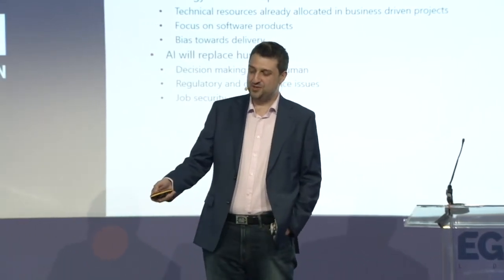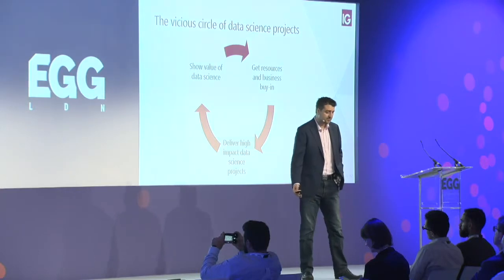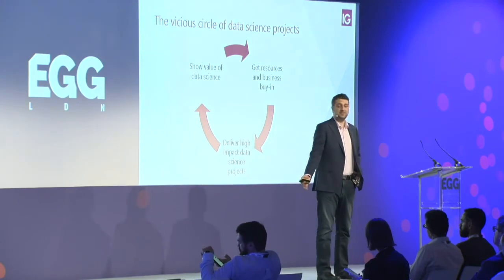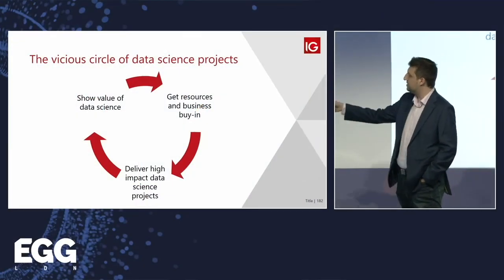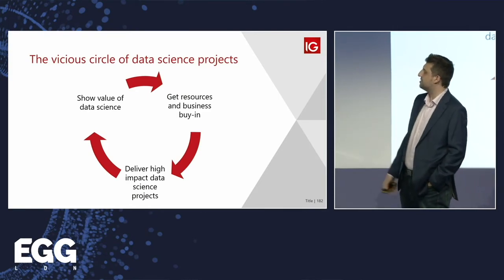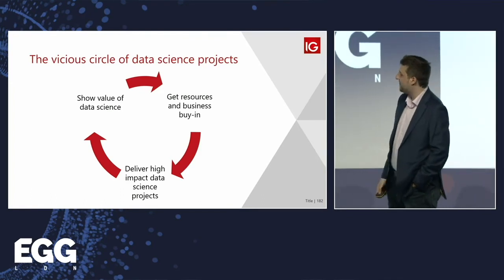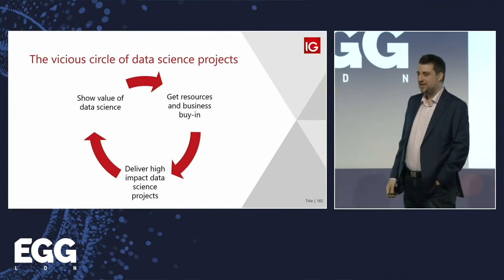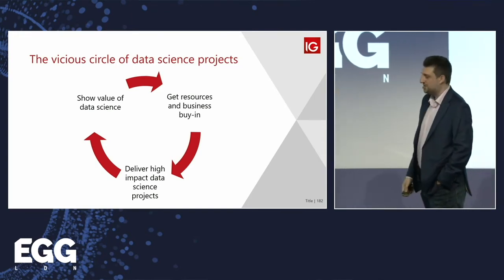Those challenges and others lead to what I call the vicious circle of data science projects. You join a company or start a new group and are asked to show the value of data science. To do that, you need resources and business buy-in. To get those, you need to deliver high-impact data science projects. But the funny thing is, you're supposed to do step one without steps two and three — so it's a bit of a catch.